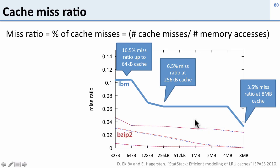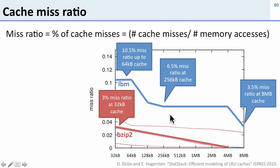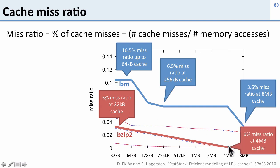Let's take a look at another application: BZIP2. BZIP2 behaves very differently. If you give it 32 kilobytes of cache, it only has a three percent miss ratio. And if you give it eight megabytes of cache — or even four — it has a zero percent miss ratio. So it has a very different sensitivity to cache size than LBM does.